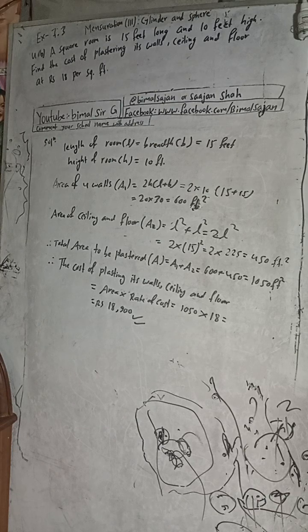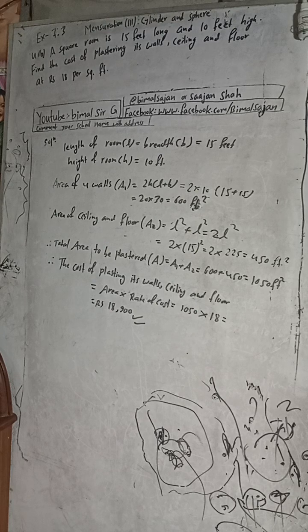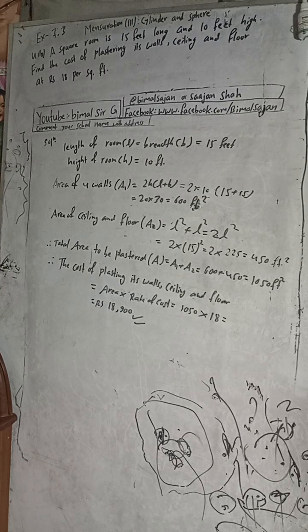So dear subscribers and viewers, this is the complete solution of question 4B. 18,900 is the required answer. The cost of plastering its walls, ceiling, and floor is 18,900. If you find this video useful, then like the video, leave sweet comments, and share with your friends.